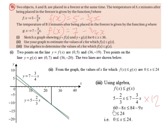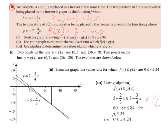So we have 60 minus 8x is less than or equal to 84 minus 9x. We bring minus 9x to the left-hand side, becoming plus 9x, and 9x minus 8x gives x. We bring 60 to the right-hand side, becoming minus 60, and 84 minus 60 is 24. So we end up with x less than or equal to 24, meaning the answer is x-values greater or equal to 0 but less than or equal to 24.